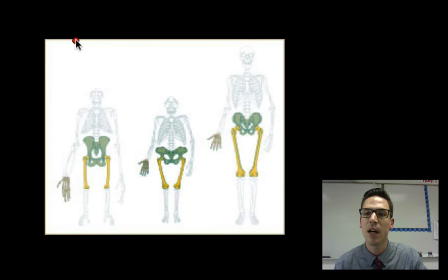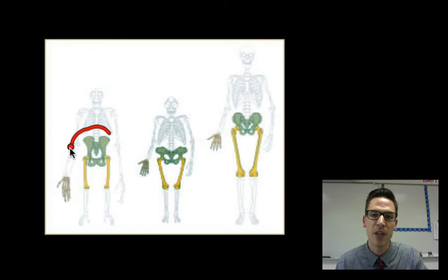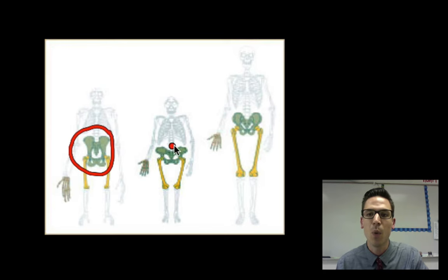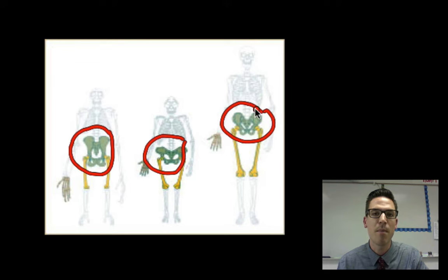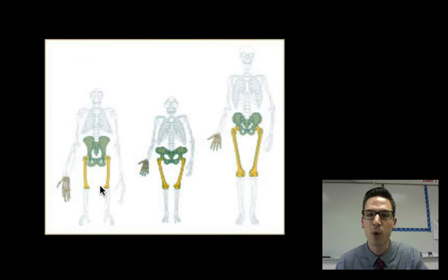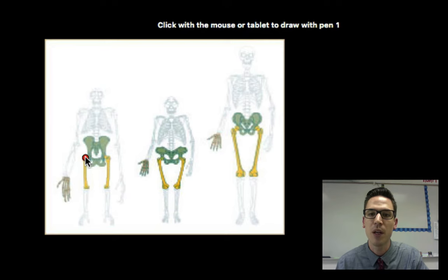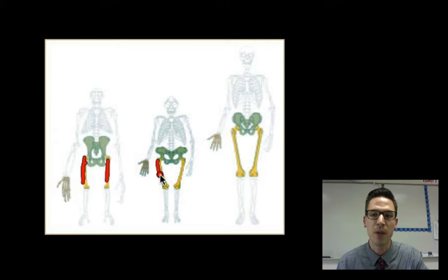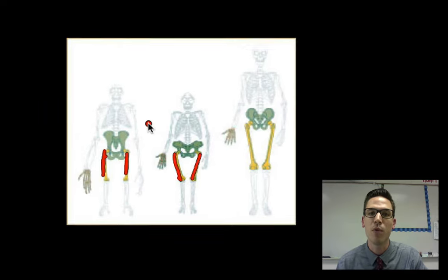Looking at pelvis structures: to the left is a gorilla, center is Australopithecus, and to the right is homo sapien. The gorilla pelvis is more narrow, skinnier, and longer. While with Australopithecus and homo sapien it is more of a bowl shape — wider, which supports the torso sitting on top. Another important thing is the thigh bones: with gorillas they point straight down, while with Australopithecus and us they point more inwards, supporting that upright movement.